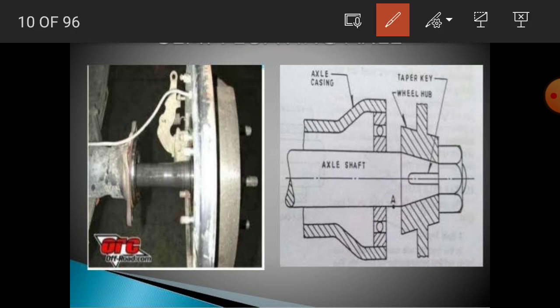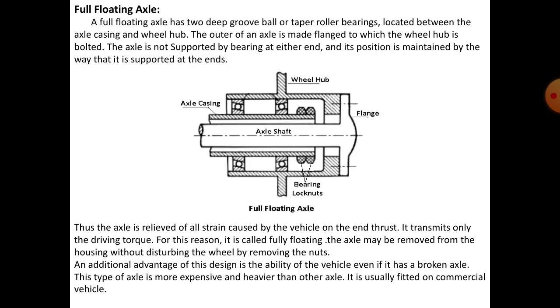Looking at the diagram of the semi-floating axle: this shows the wheel hub, the shaft, and the axle casing. The bearings are mounted between the axle casing and the shaft.